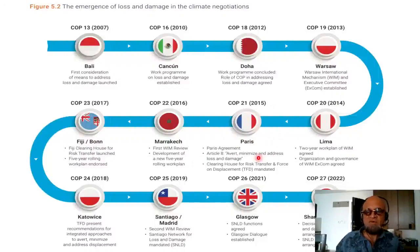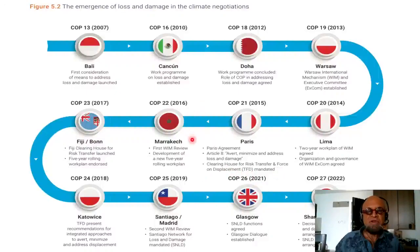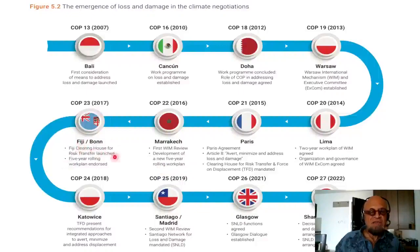At COP21 in 2015 in Paris, the Paris Agreement came about. Article 8 stated: Avert, Minimize, and Address Loss and Damage. A Clearinghouse for Risk Transfer and Task Force on Displacement were mandated. At COP22 in 2016 in Marrakesh, the first WIM review was held and a new five-year rolling work plan was developed. In Fiji Bonn in 2017, the Fiji Clearinghouse for Risk Transfer was launched and the five-year rolling work plan was endorsed.